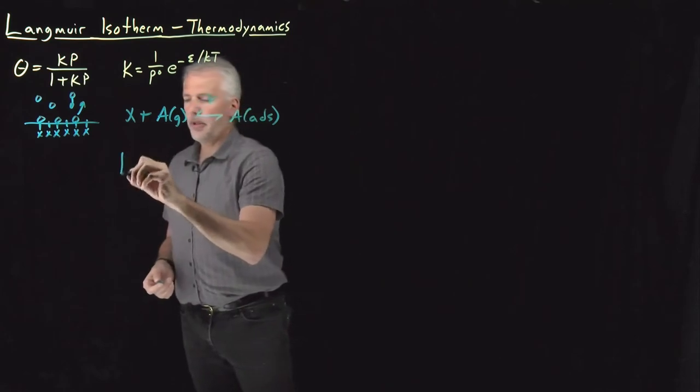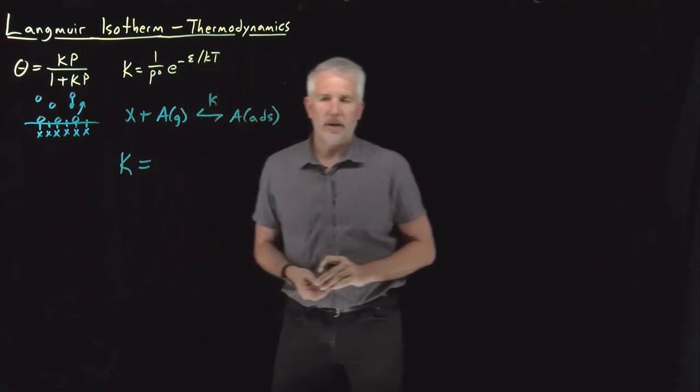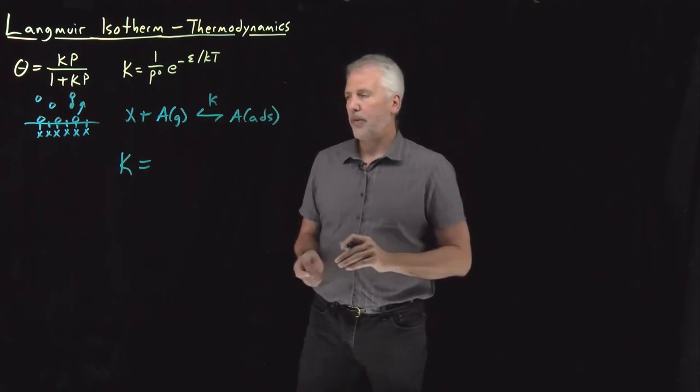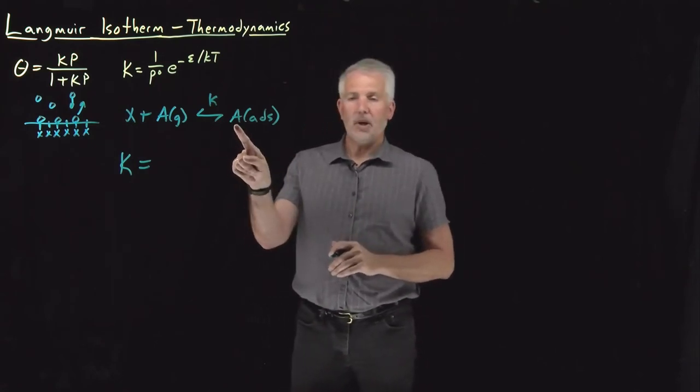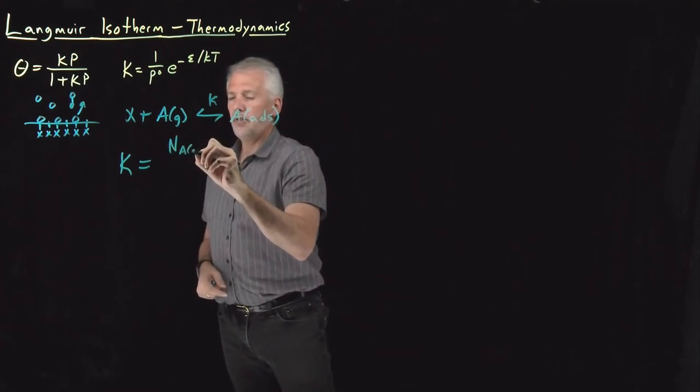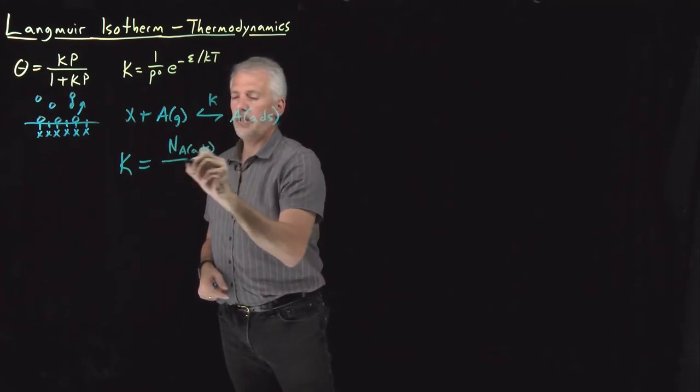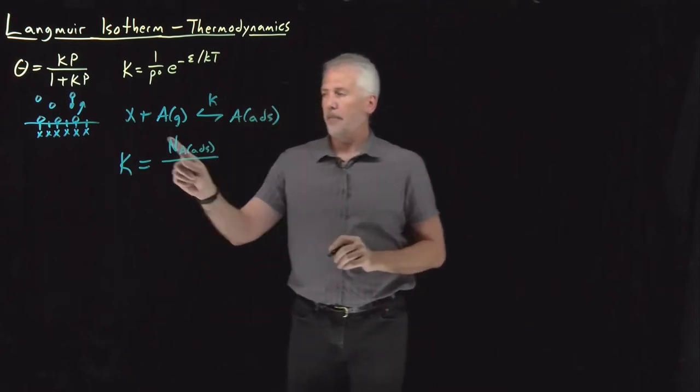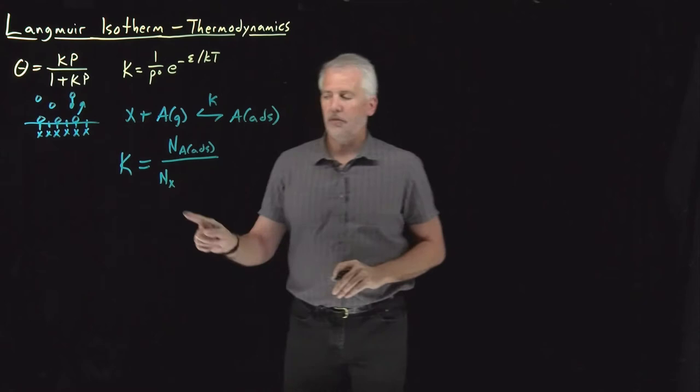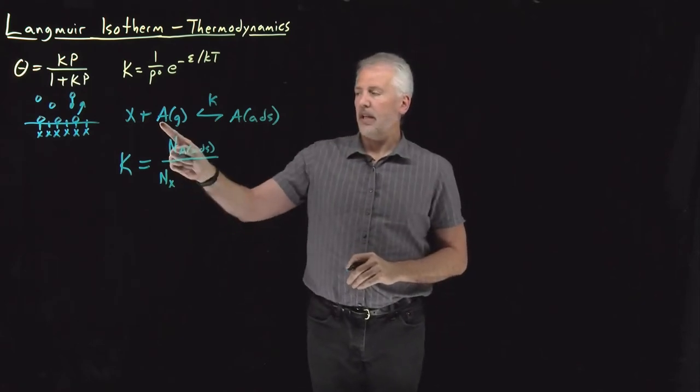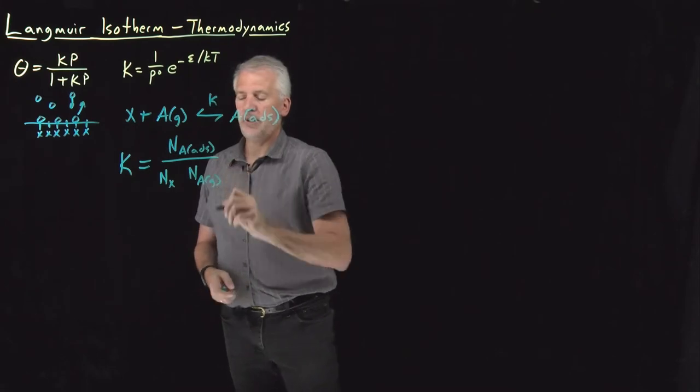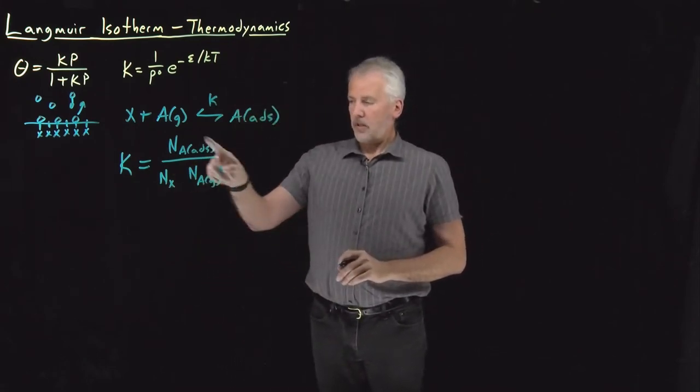The equilibrium constant for that reaction, we can write that as a Kp or a Kn, we can write it in lots of different ways, but if I write that as molecule numbers, that'll be number of adsorbed species divided by number of these unoccupied empty surface sites, X, and number of gas phase species.